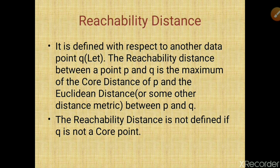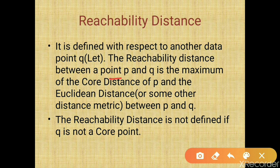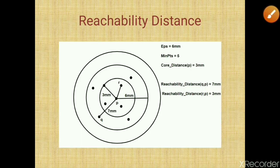Now moving on to reachability distance. Reachability distance is defined with respect to another point. The reachability distance of points p and q is the maximum of the core distance of p and the Euclidean distance between p and q.